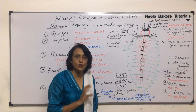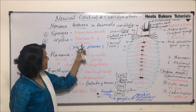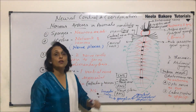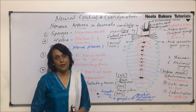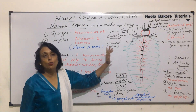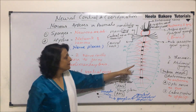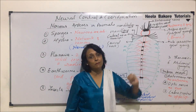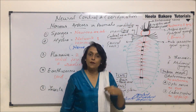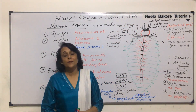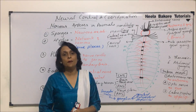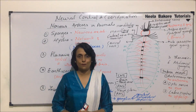In insects, compared to other invertebrates, the nervous system is very well developed. There are a total of nine ganglia: three in the thoracic region and six in the abdominal region, apart from the two main ones above and below the esophagus. After understanding the nervous system of cockroaches, from the next segment we will cover the human nervous system.